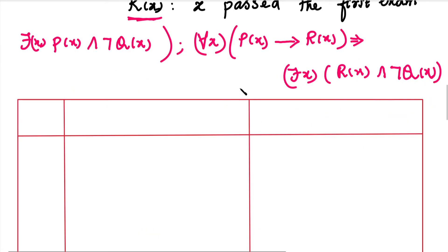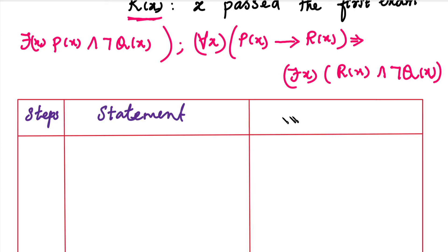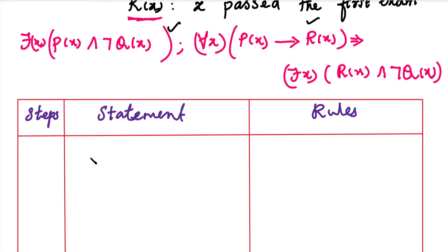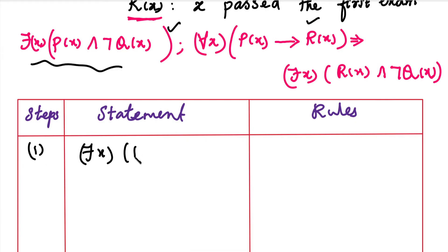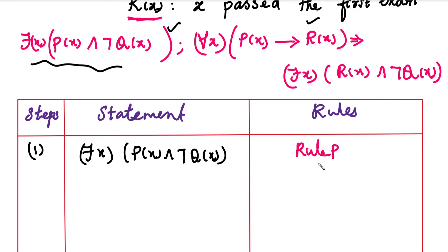Now we can solve the problem by adding the proof steps, stating the rules and names used. In our premises there are two statements. We add them both as Rule P. The first statement is: there exists some x, P(x) ∧ ¬Q(x). This is Rule P.